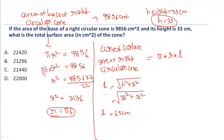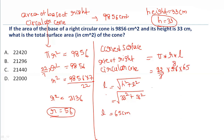Now we can calculate the curved surface area of the right circular cone: (22/7) × 56 × 65. Solving this calculation, the curved surface area is 11,440 cm². Total surface area means the area of the base of the right circular cone plus the curved surface area of the right circular cone.